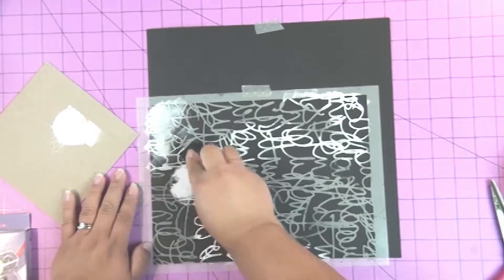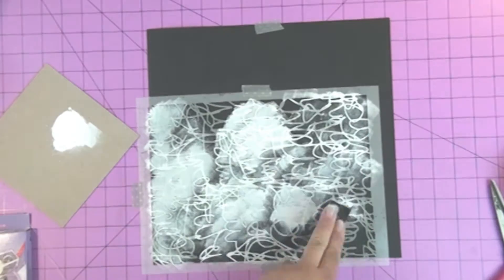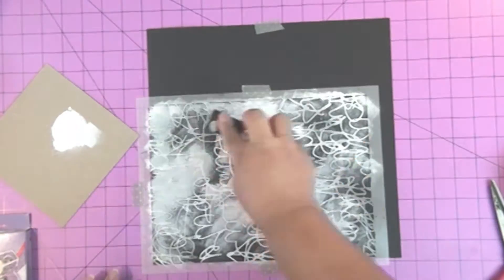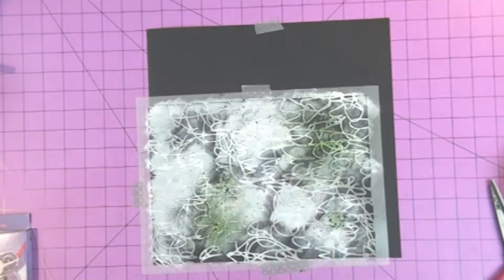This is so it doesn't move around. Now I put some white acrylic paint onto a scrap of chipboard and I'm using a foam paintbrush to dab the paint through the stencil, doing it kind of thick in some places and thin in other places.